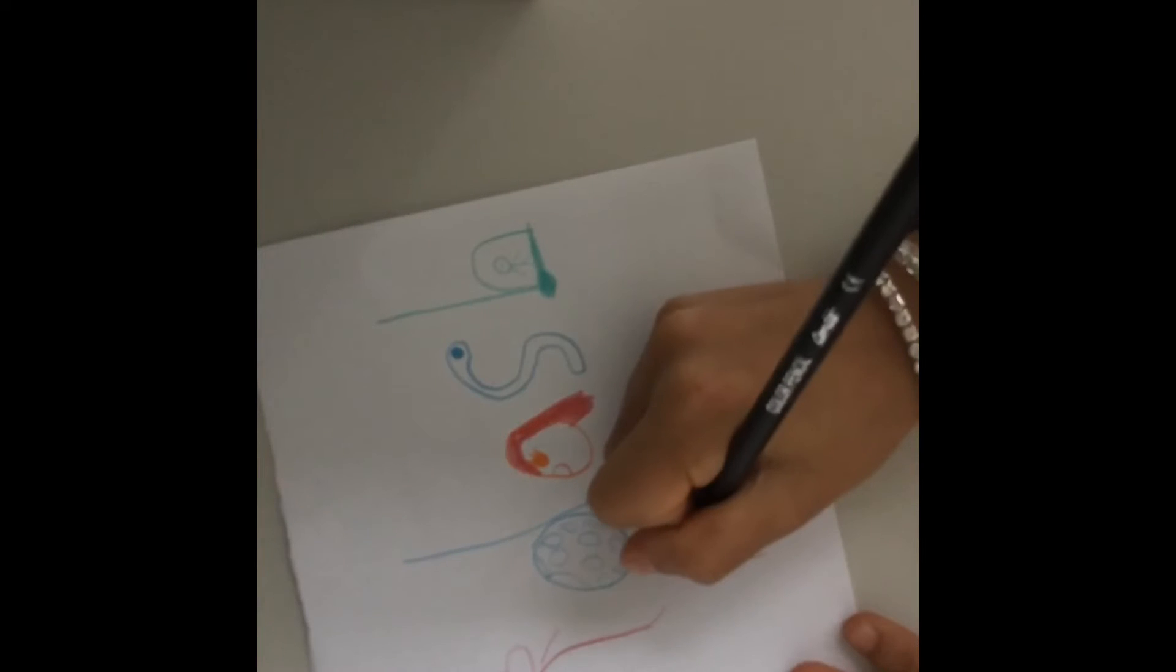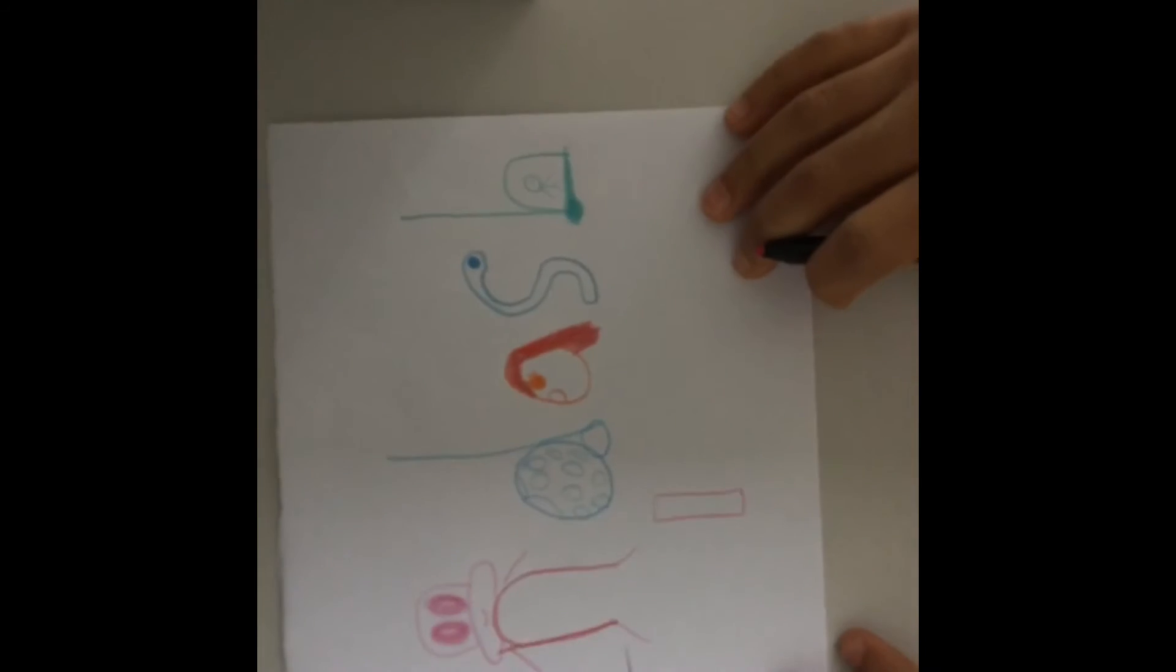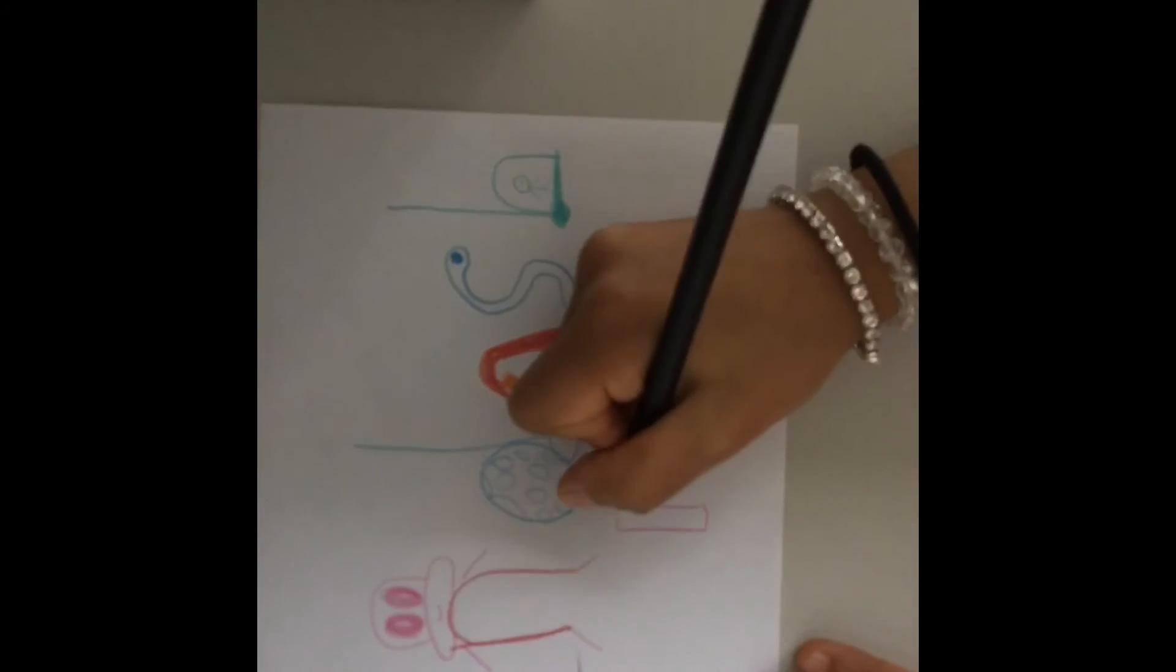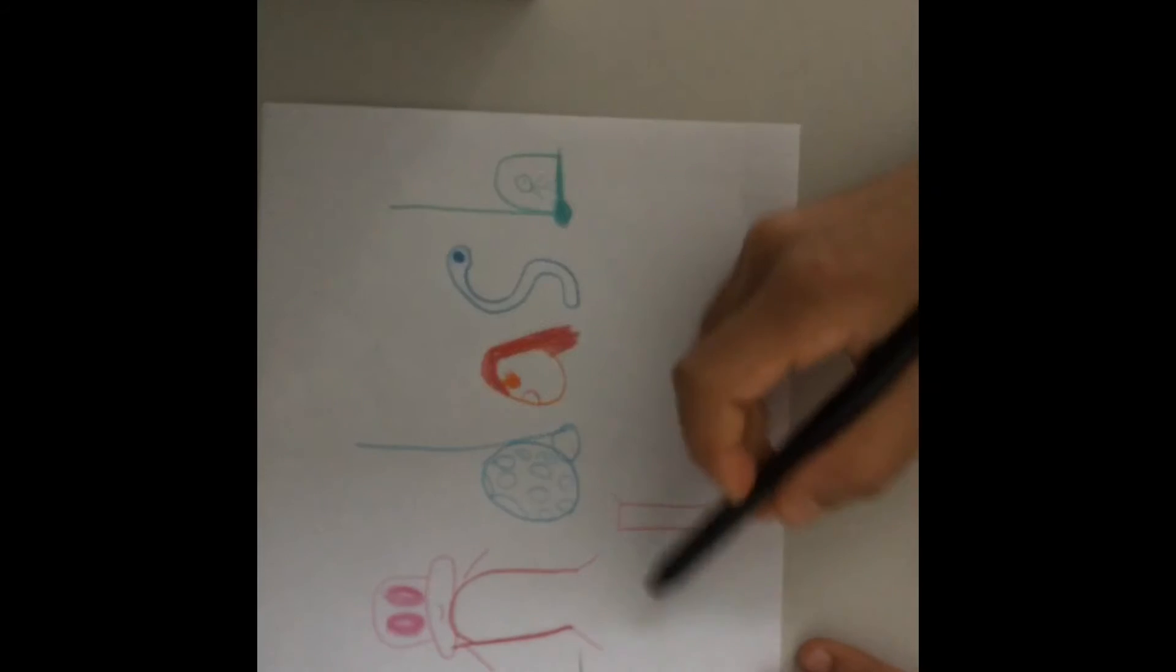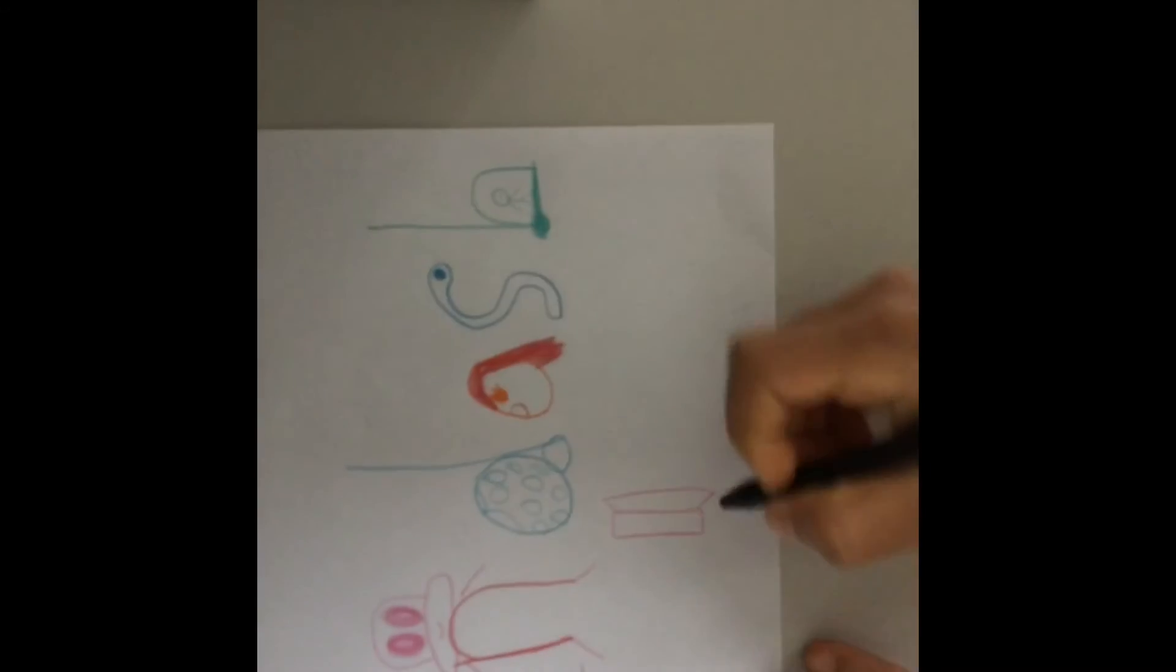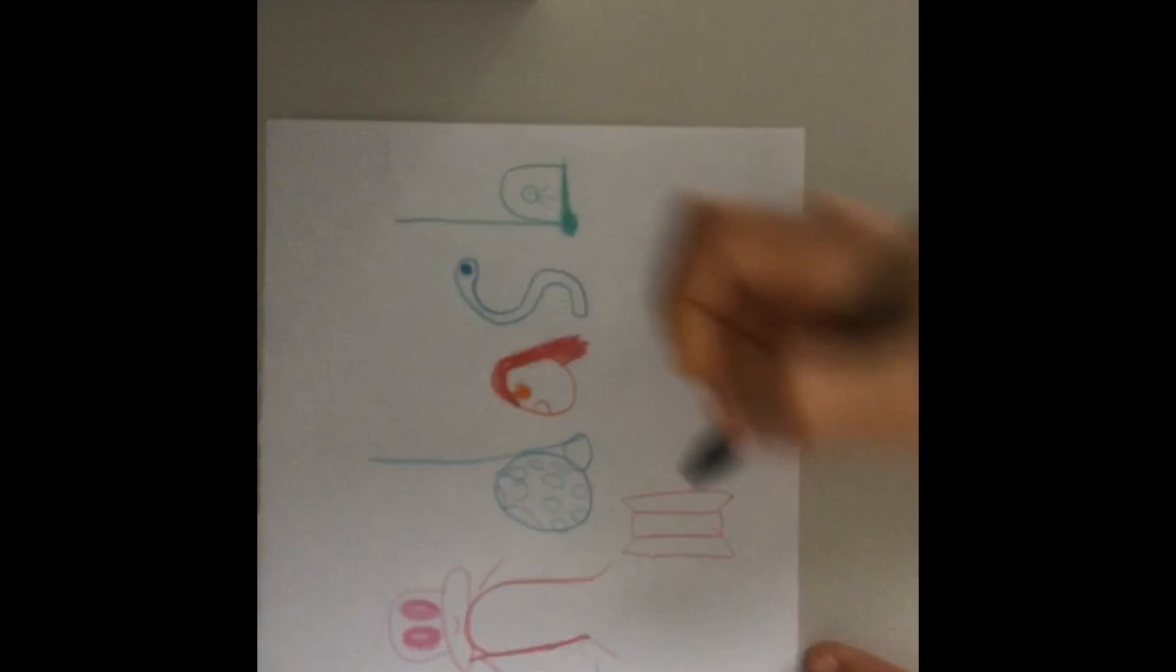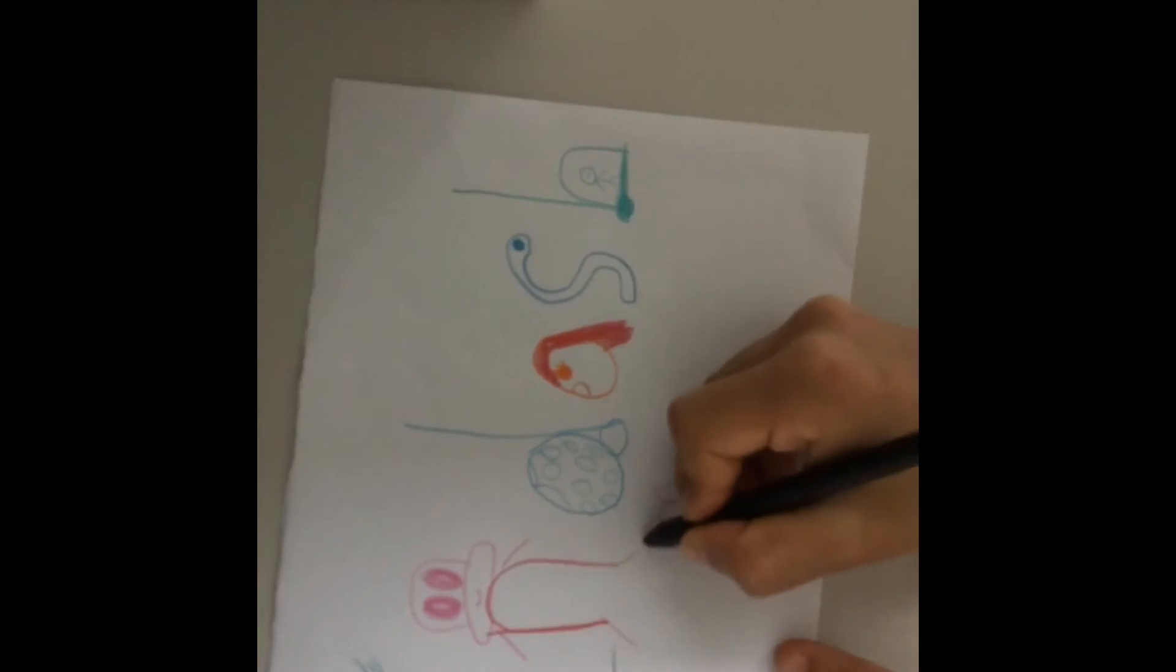And now we're going to do an exclamation mark in 3D. So we're going to do a thin rectangle, then draw a little line on top and bring it down, and then another side the same. Then draw a square here.